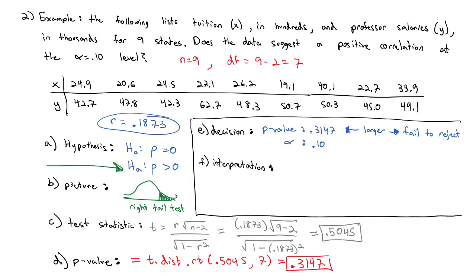Remember the interpretation always focuses on the alternative hypothesis. We failed to reject so we failed to show the alternative hypothesis. So we will say there is not significant evidence at the alpha equals 0.10 level that rho is greater than 0, that instructor salaries and tuition are positively correlated. So we do not have a positive relationship between the two. We were not able to show any relationship existed.